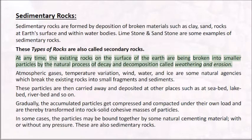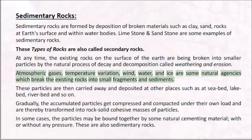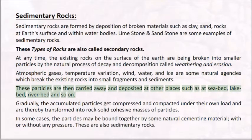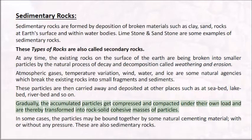Atmospheric gases, temperature variation, wind, water, and ice are some natural agencies which break existing rocks into small fragments and sediments. These particles are then carried away and deposited at other places such as sea bed, lake bed, river bed, and so on. Gradually, the accumulated particles get compressed and compacted under their own load and are thereby transformed into rock solid cohesive masses of particles.